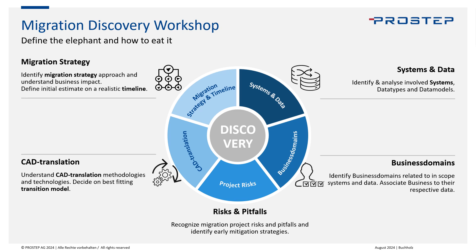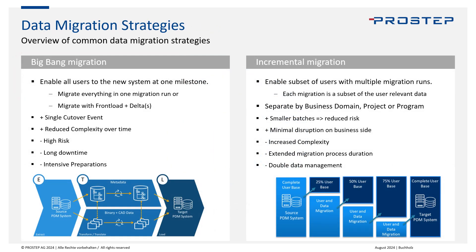In today's session, we focus on migration strategy. I've brought four data migration strategies. The first is Big Bang migration. Most people think it means moving all data into the new system at once, but it actually means enabling all users at one milestone in the new system. Data migration itself can be one large run, a front-load plus delta, or multiple deltas — it's about a single user cutover, not a single data move.